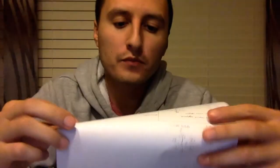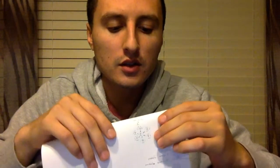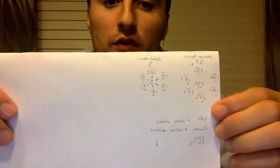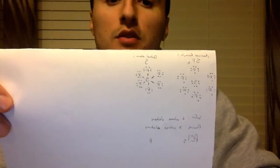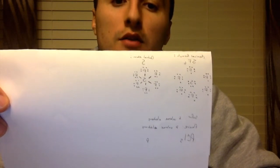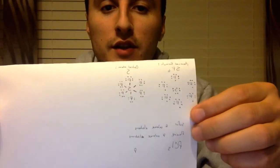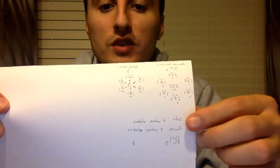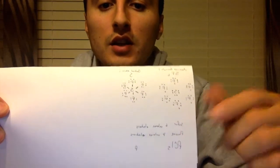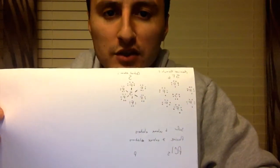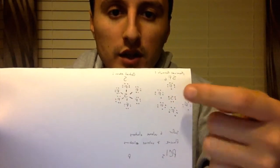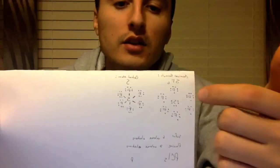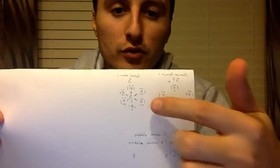Now we've chosen our second chemical formula from group one. Here I've drawn out our sulfur hexafluoride, SF6. Sulfur contains a total of six valence electrons and fluorine contains a total of seven valence electrons. I've drawn out our dot diagram with sulfur as the central atom and our six fluorine atoms surrounding it.